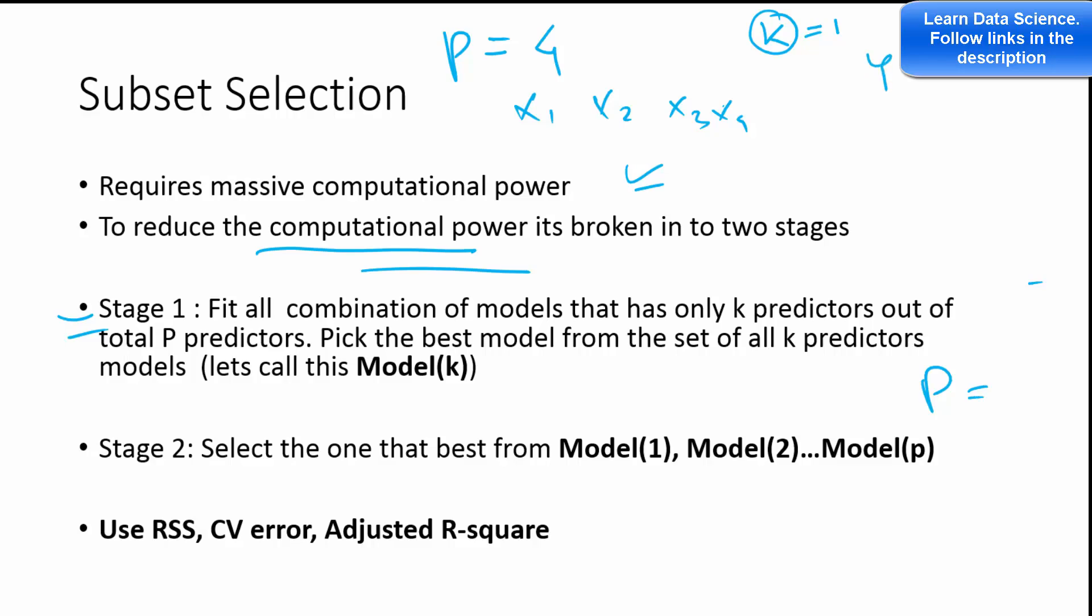So Y is a function of X1, then Y is a function of X2, Y is a function of X3, and Y is a function of X4. So when k equals 1, you have four models and you will have to choose what is the best out of these four models. So in the first step, you just compute the four models and pick the best one of them.